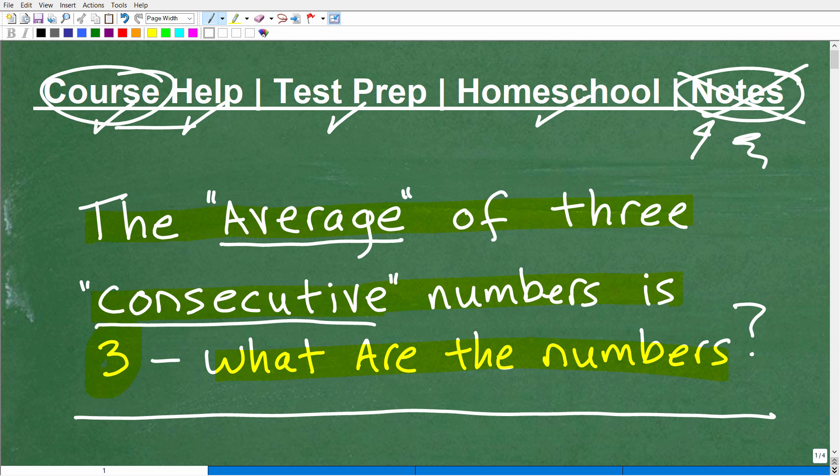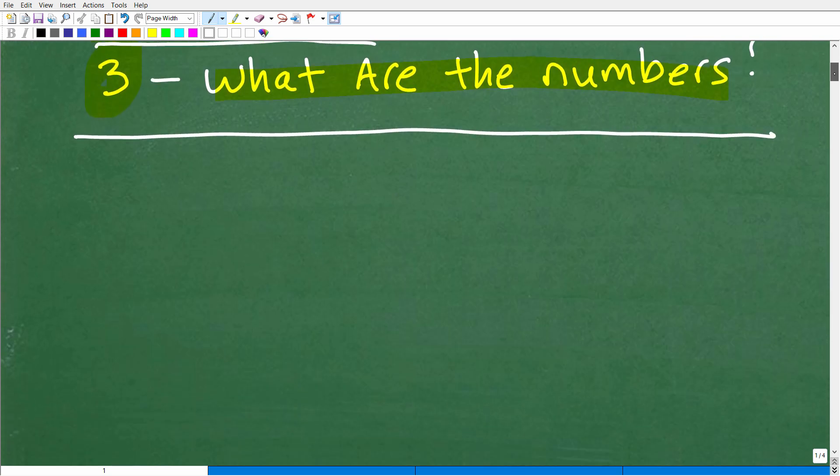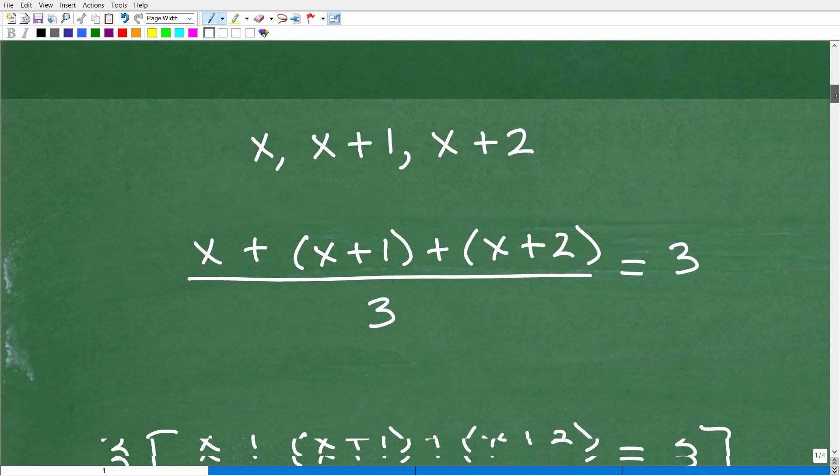Okay, so here we go. The average of three consecutive numbers is 3. What are the numbers? Let's get into it. Again, if you don't want to see the answer yet and you want to work on it and put your answers into the comments section, go ahead and do so. But I'm going to get into the solution now.